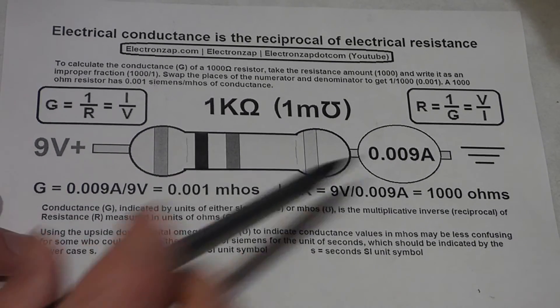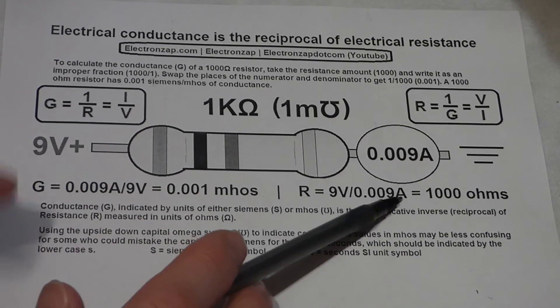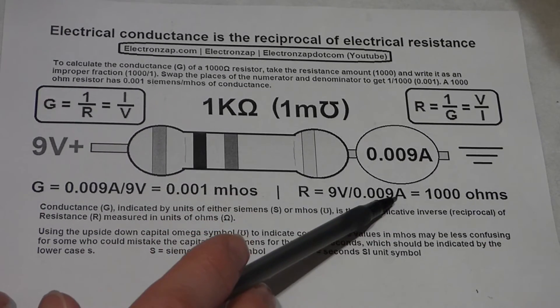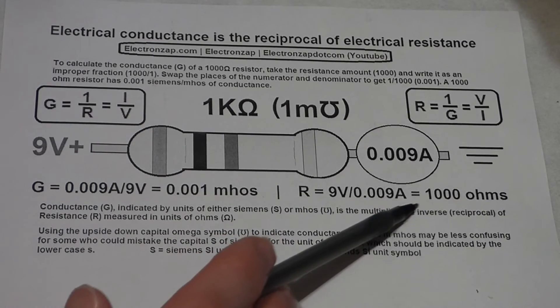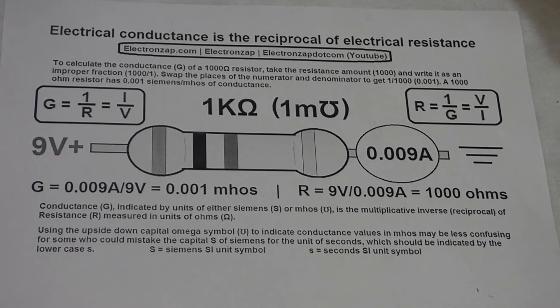Remember, when you're using these formulas, current is in amps. Even though we're getting milliamps in our readings, you got to convert them to amps to get an accurate formula. And that'll equal 1,000 ohms, so 1 kiloohm.